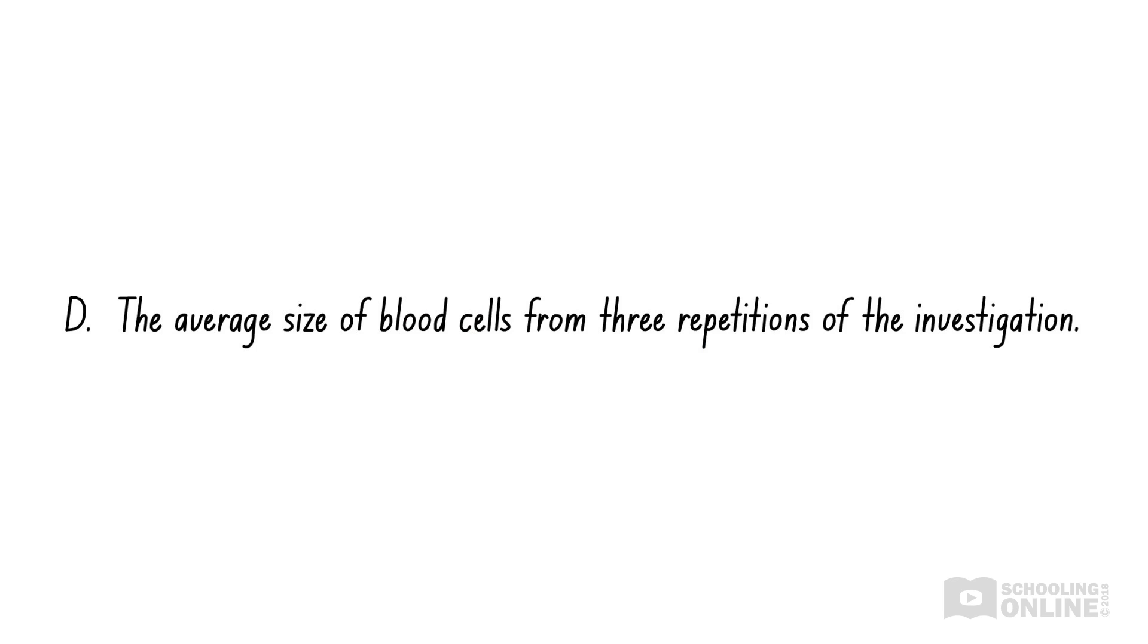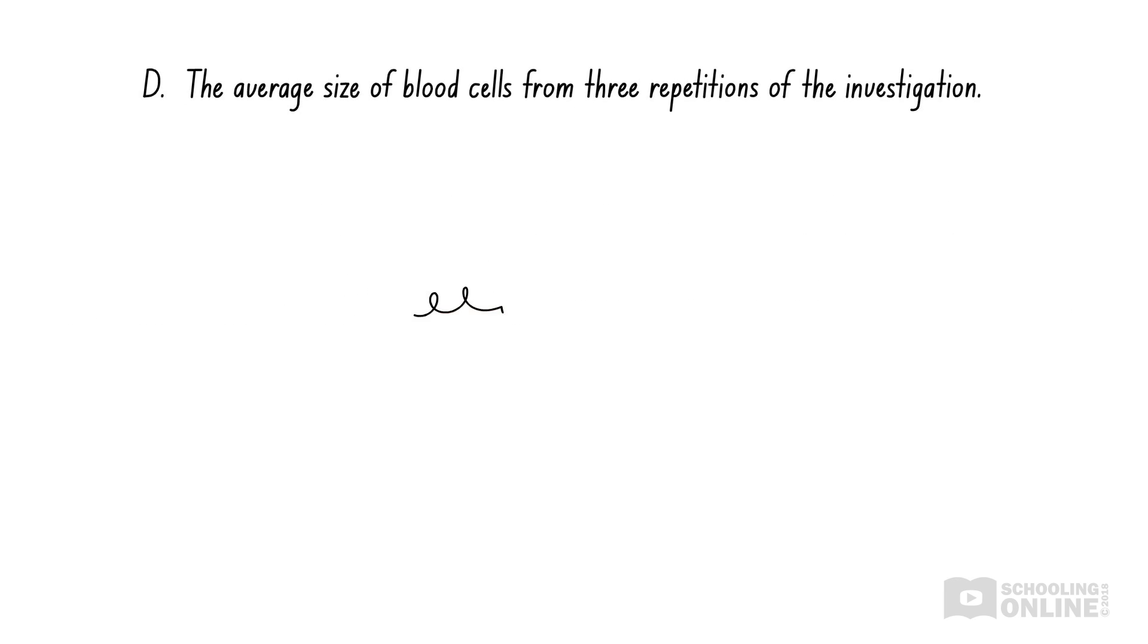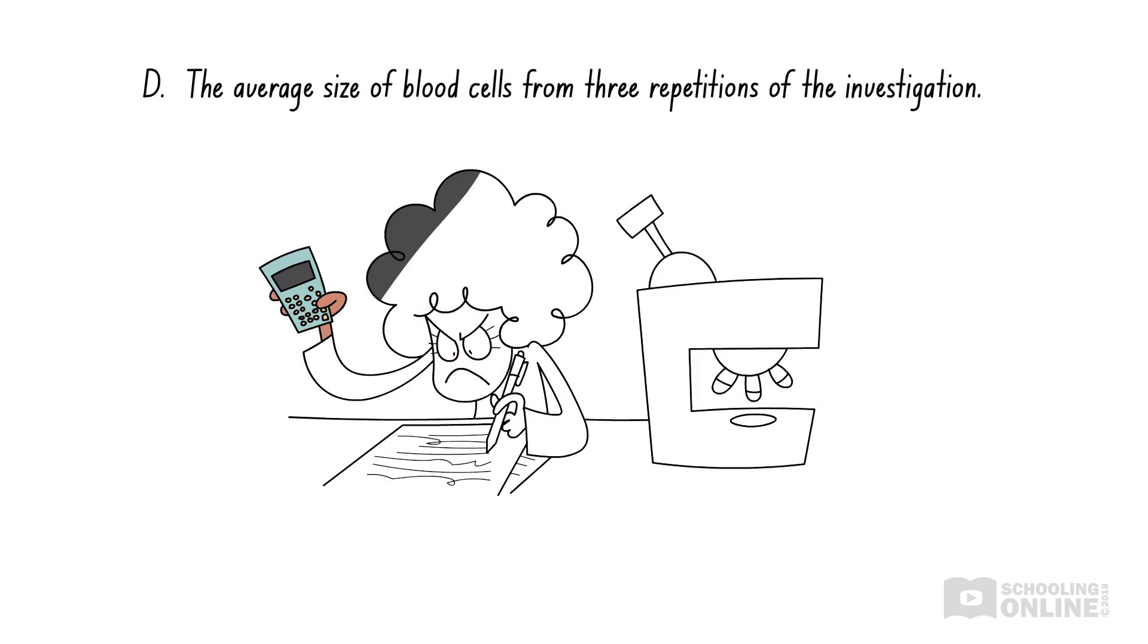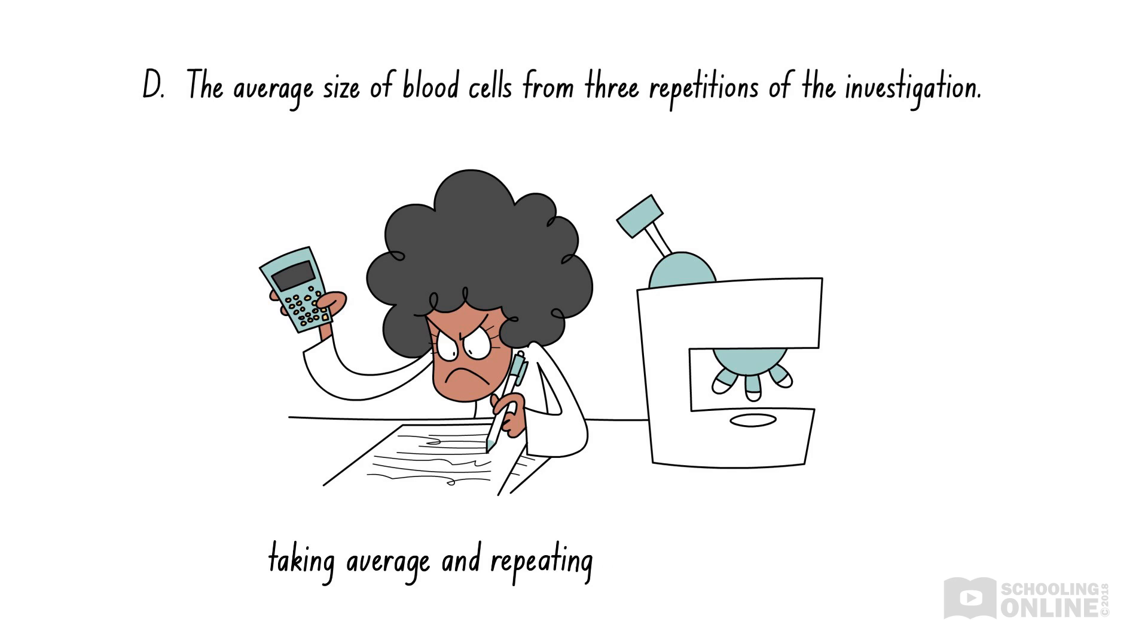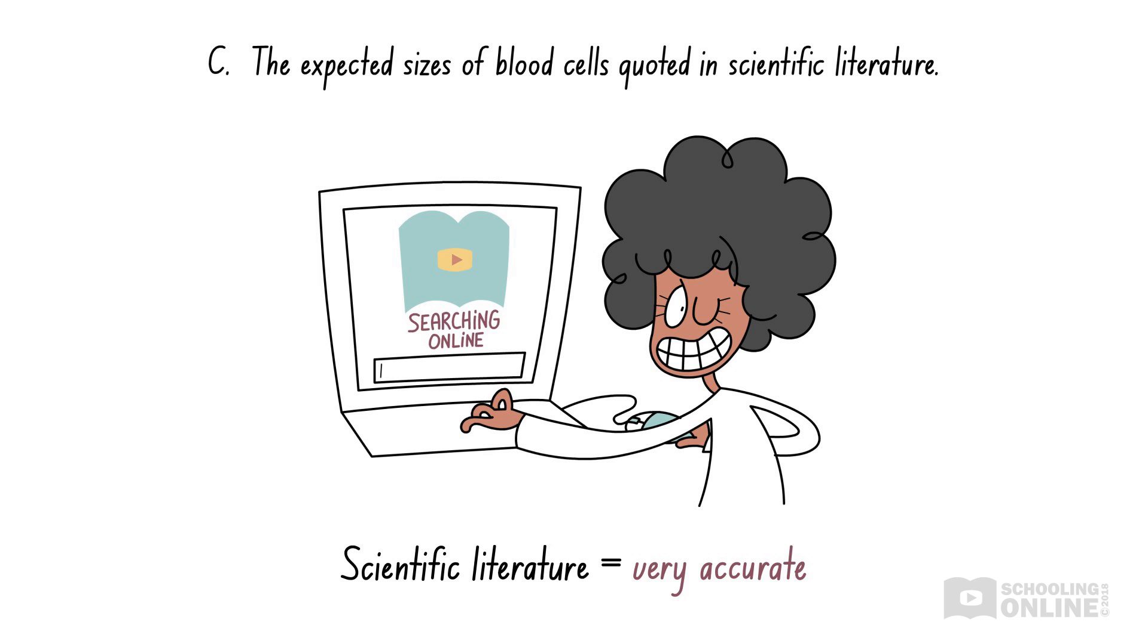Option D describes repeating the experiment and taking an average. This is definitely an important thing to do, but it has no effect on the accuracy of the data. Remember, accuracy depends on how close the experimental results are to the true value, while reliability refers to performing repetitions of the same experiment. So, taking an average improves the reliability of the data. Thus, option D is incorrect. This means that our earlier reasoning was right. After estimating the sizes of blood cells using a microscope, Donna should assess her accuracy by comparing her findings to the expected values quoted in scientific literature. Hence, option C is the correct answer.